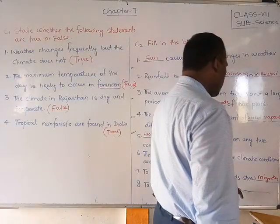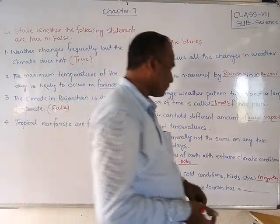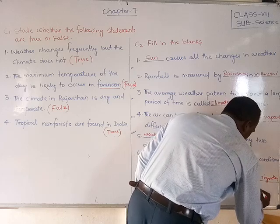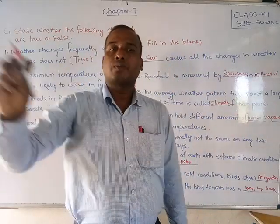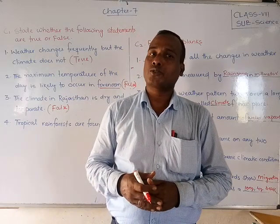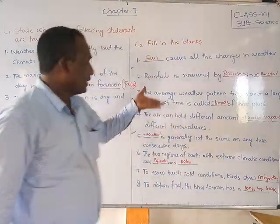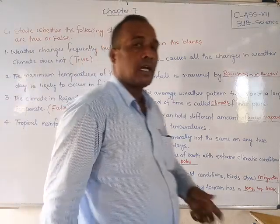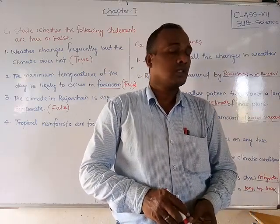Eighth blank: to obtain food, the bird toucan has a long and big beak. It can catch fruit with its long beak, which is also strong. These are the fill in the blanks answers. Next we have to discuss match the following questions and web charts or other things in the next video.